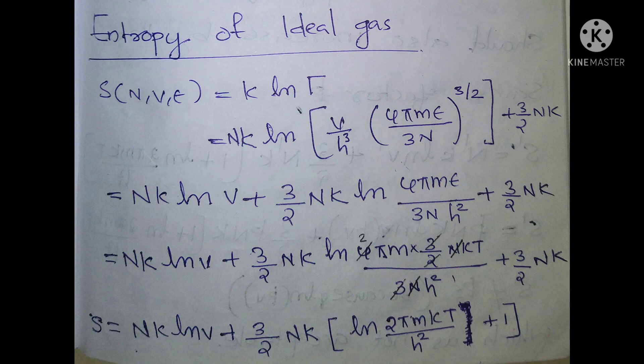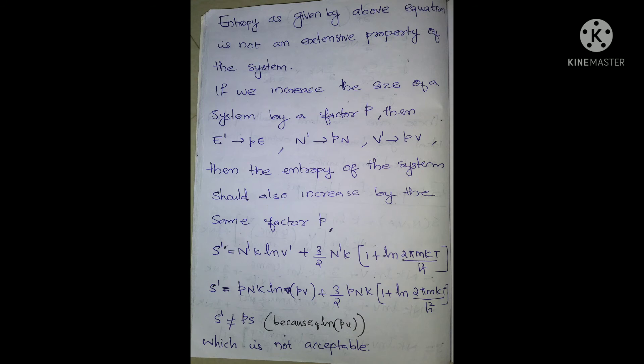What we do here is substitute V. The second term and third term are combined. The result is log(2πmk / h²) plus 1. With this entropy equation, entropy is an extensive property — it is an extensive variable.